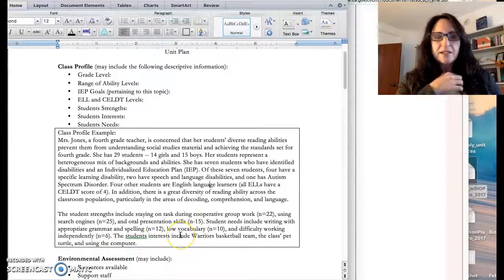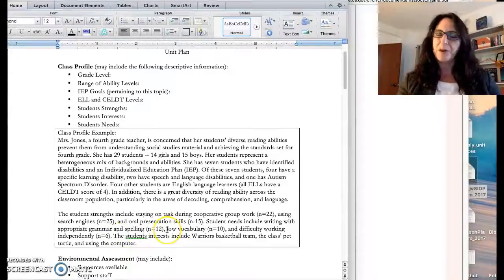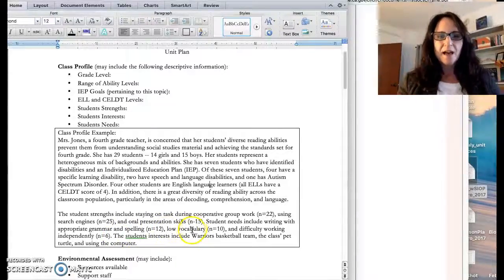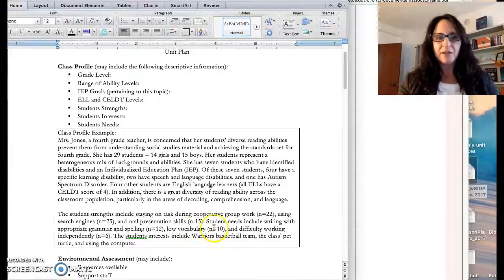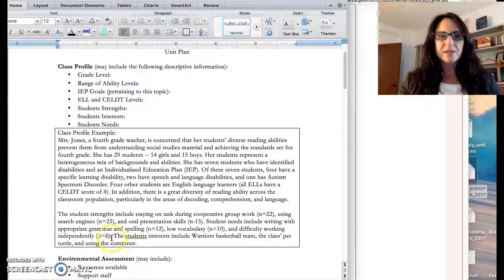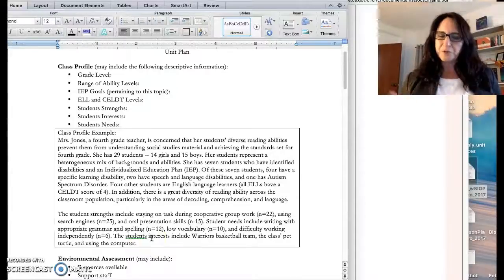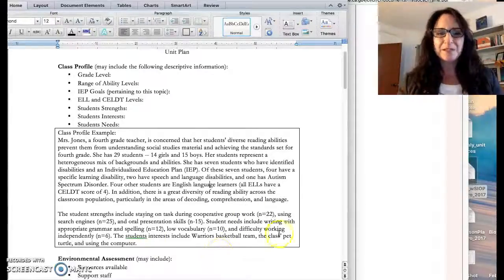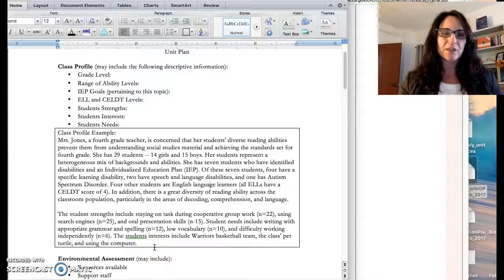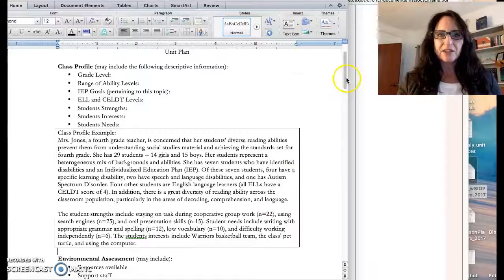About 12 write with appropriate grammar and spelling, so it's a little bit low. 10 of them have low vocabulary and six of them have difficulty working independently. I said that the students' interests, because I did some sort of inventory at the beginning of the year, are the Warriors basketball team, the class pet turtle, and using the computer.